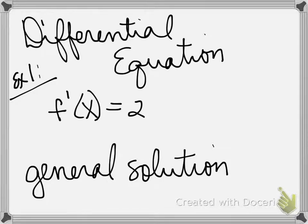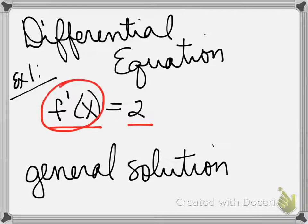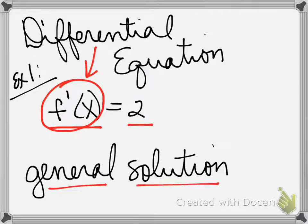When we have a derivative, it's called a differential equation. So if I were to tell you f prime of x equals 2, I'm telling you the derivative of f is 2. So this is called a differential equation. When we're trying to find the solution to a differential equation, we're going to start off finding general solutions.